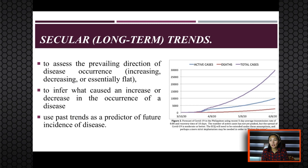Next we have secular long-term trends. Graphing the annual cases or rates of cases of a specific disease over a period of years shows the long-term direction. Health officials use these graphs to assess whether a disease is increasing, decreasing, or essentially flattening, which helps them evaluate programs, make policy decisions, and make inferences about what caused the increase or decrease in disease occurrence.